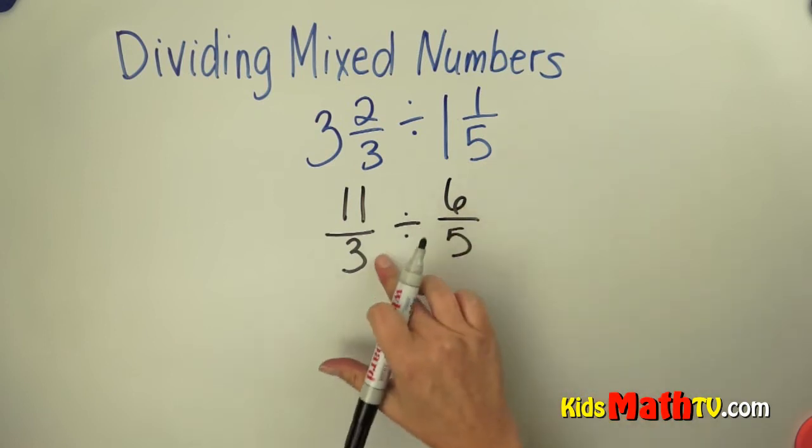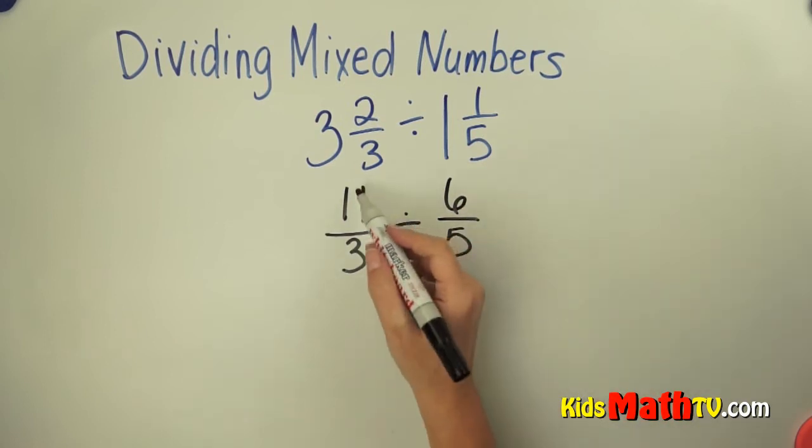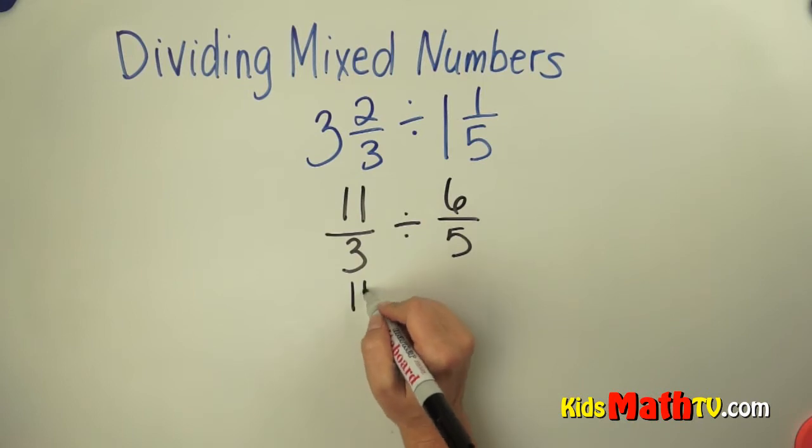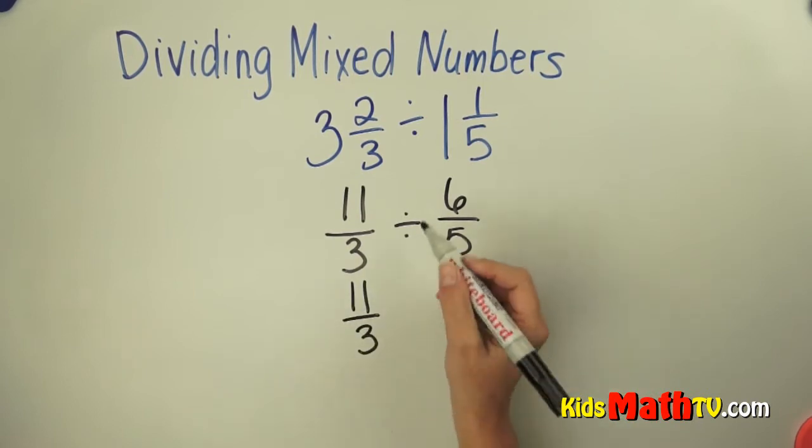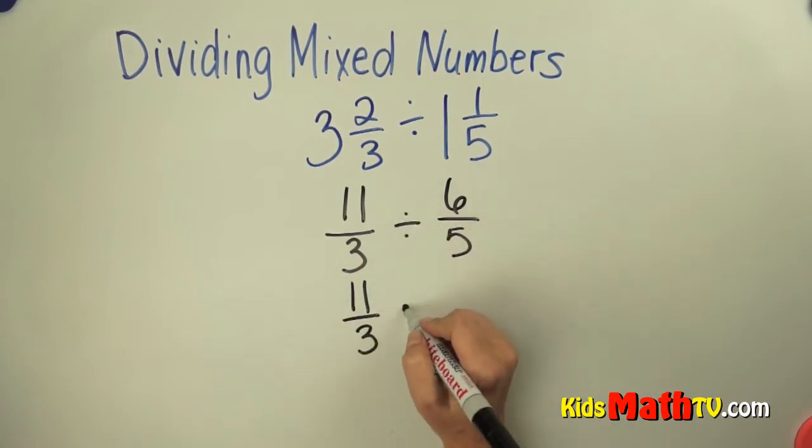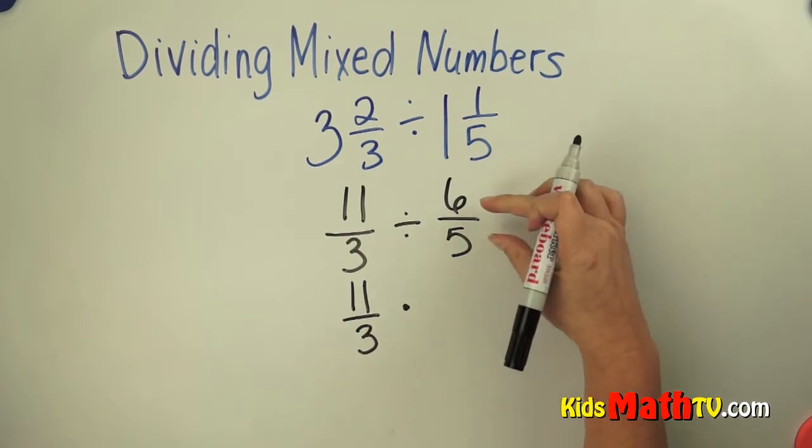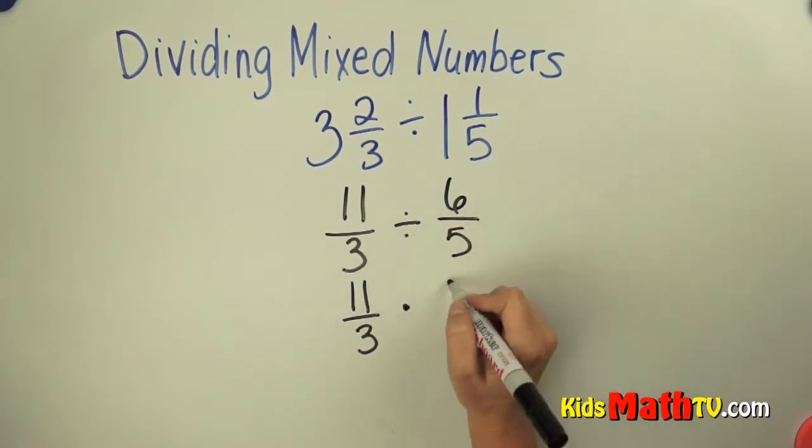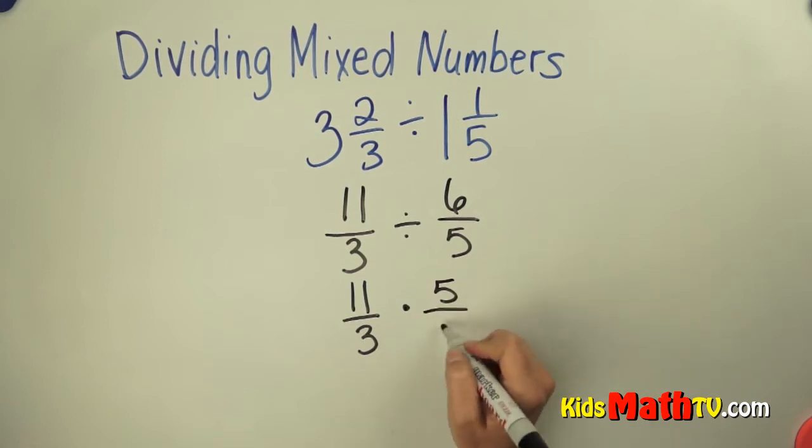So 11 thirds divided by 6 fifths. We're going to leave the first fraction 11 thirds. We're going to change this division into multiplication, and we're going to multiply by the reciprocal of this number, 5 sixths.